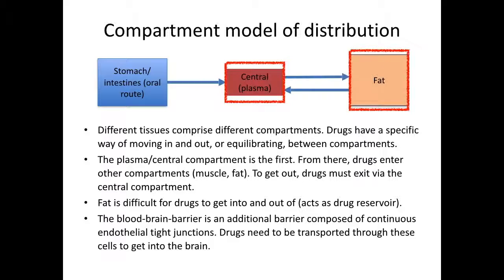The fat compartment can act as a drug reservoir because it has poor circulation penetration. Drugs enter the fat compartment slowly, but also exit slowly. The blood-brain barrier is an additional barrier that drugs have to cross to get into the brain. Psychoactive drugs need to be transported across the blood-brain barrier to have an effect.